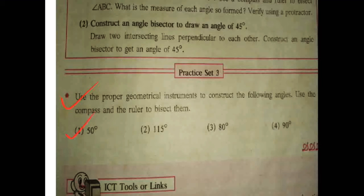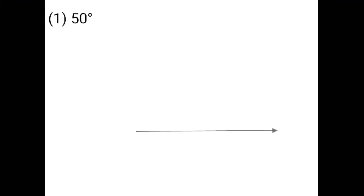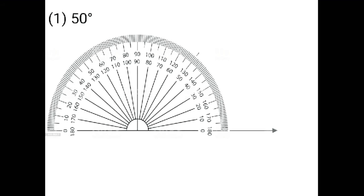First one, 50 degree. You have to draw a 50 degree angle with the help of your protractor. First you have to draw the bottom ray like this. This is the starting point of the ray. You have to place your protractor on the starting point of the ray and then mark 50 degree. 50 degree is here, which I circled, where I drawn a small black line.